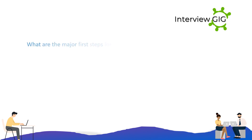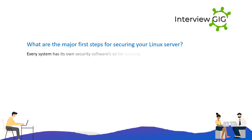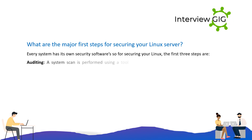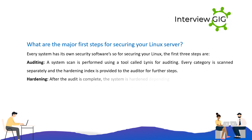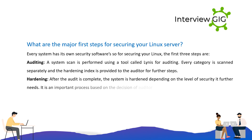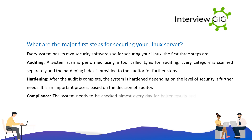What are the major first steps for securing your Linux server? The first three steps are: Auditing — a system scan is performed using a tool called Lynis for auditing; every category is scanned separately and the hardening index is provided to the auditor for further steps. Hardening — after the audit is complete, the system is hardened depending on the level of security it further needs; it is an important process based on the decision of the auditor. Compliance — the system needs to be checked almost every day for better results and lesser security threats.